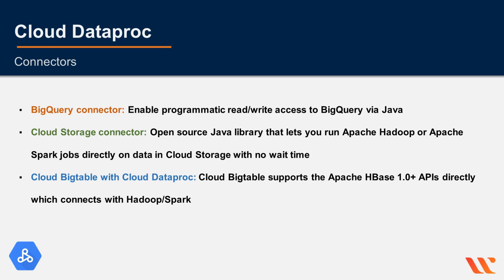Some Cloud Storage connector benefits include direct data access to data stored in Cloud Storage, which is available to other applications even with the Hadoop cluster shut down, and there's no routine maintenance required as you would need with HDFS. With Cloud Storage, you can start the job as soon as the task nodes start, compared to having to wait until the NameNode is out of safe mode with HDFS. Bigtable is Google's NoSQL Big Data database service and supports the HBase 1.0+ APIs, offering a Cloud Bigtable and HBase client in Maven, making it easy to use Bigtable with Dataproc.